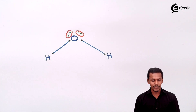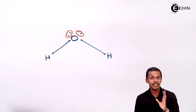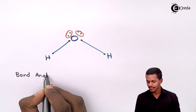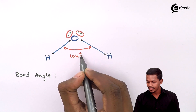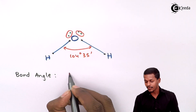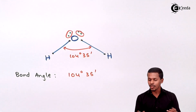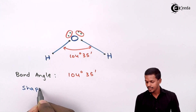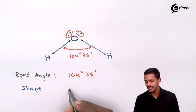Because of the repulsion between the lone pairs and the bond pairs, the actual bond angle of water is found to be 104°35'. So the shape of the water molecule is a V-shape, as you can see — it is basically a bent or V-shape molecule.